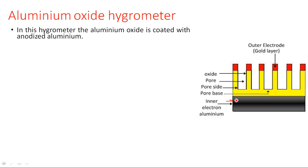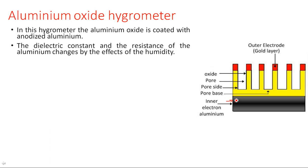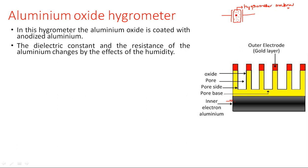In this hygrometer, the aluminum oxide is coated with anodized aluminum. The dielectric constant and the resistance of the aluminum changes by the effects of humidity. In the capacitance hygrometer, two conducting plates are separated by a dielectric medium made up of hygrometer material. Our aim is to find the amount of humidity measured by this hygrometer material.